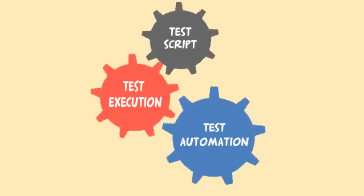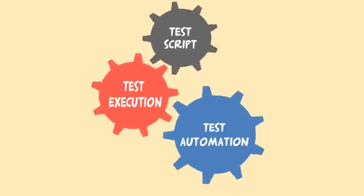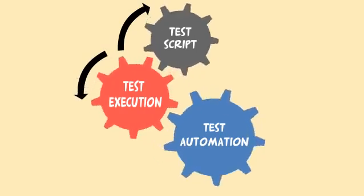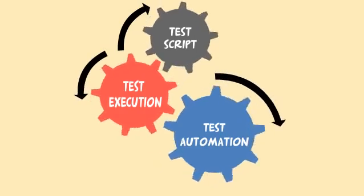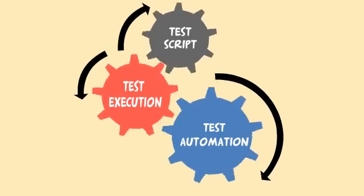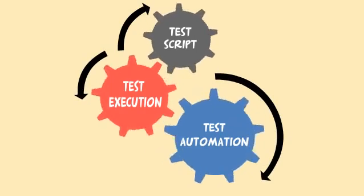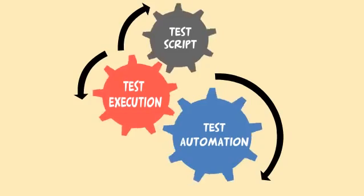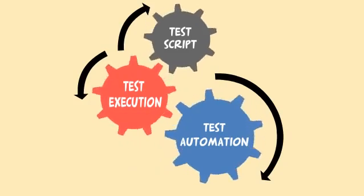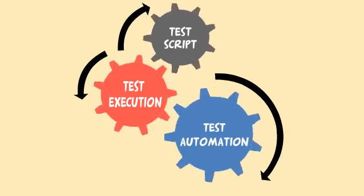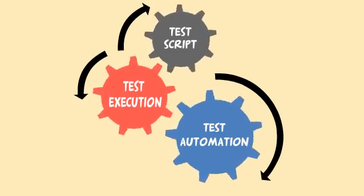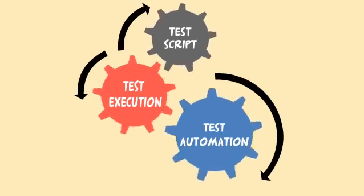In automation testing, the tester writes scripts and uses another software to test the software. This testing is used to re-run the test scenarios that were performed manually, quickly and repeatedly.